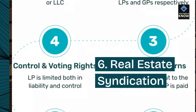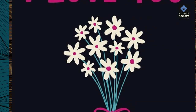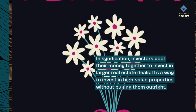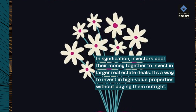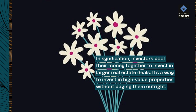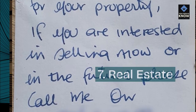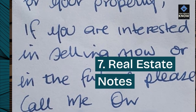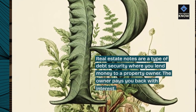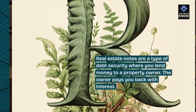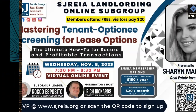6. Real Estate Syndication. In syndication, investors pool their money together to invest in larger real estate deals. It's a way to invest in high-value properties without buying them outright. 7. Real Estate Notes. Real estate notes are a type of debt security where you lend money to a property owner. The owner pays you back with interest.